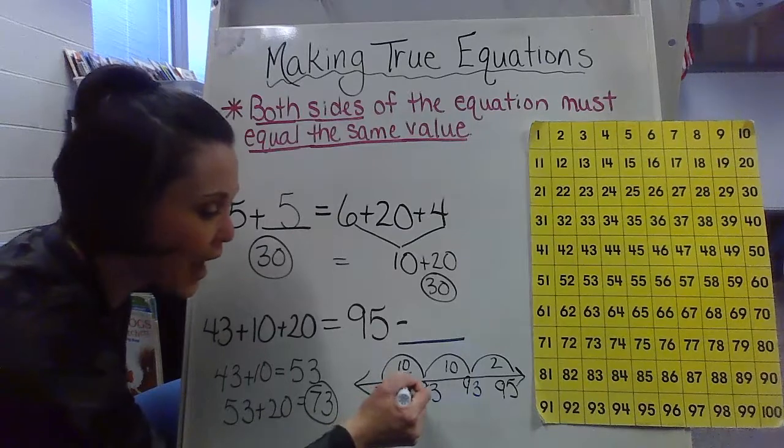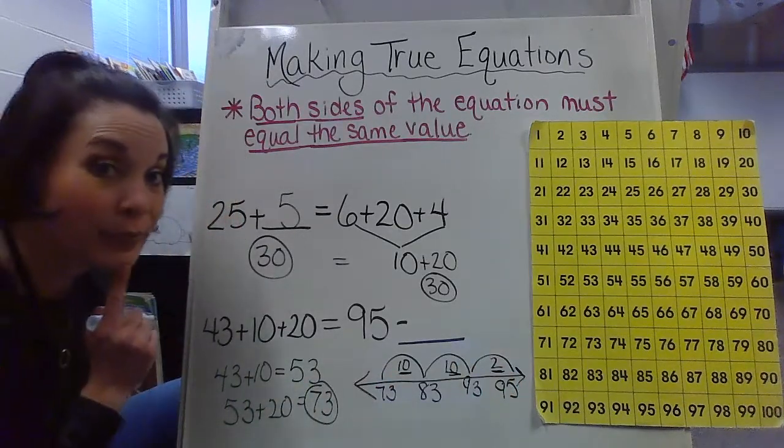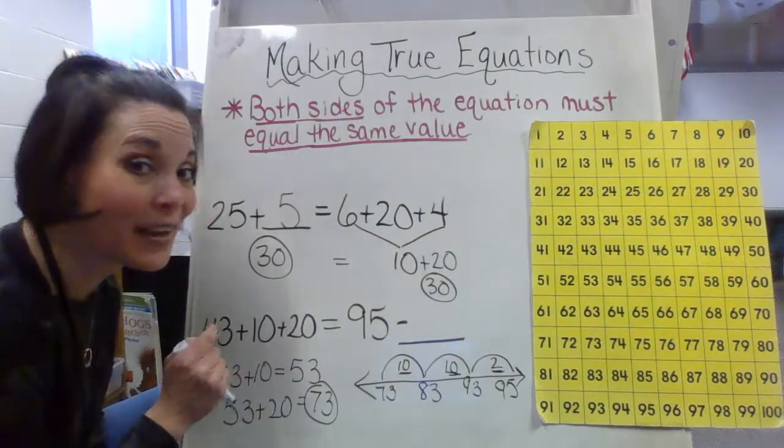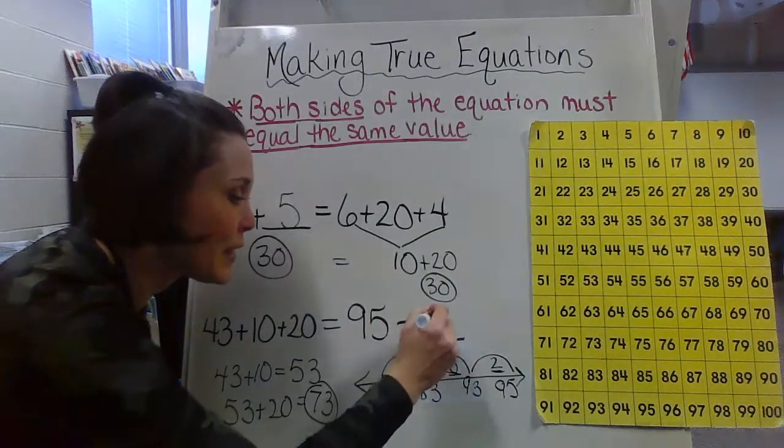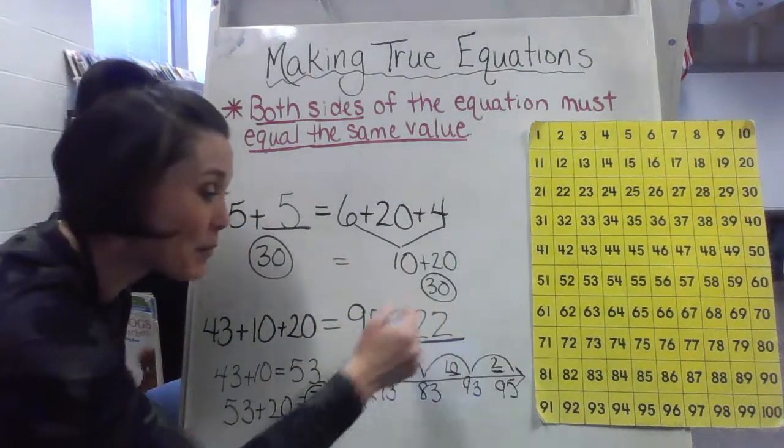So I have to add 10, 10 and 2. 10 plus 10 is 20. 20 plus 2 more is 22. So that would be my missing number.